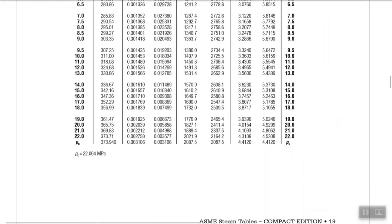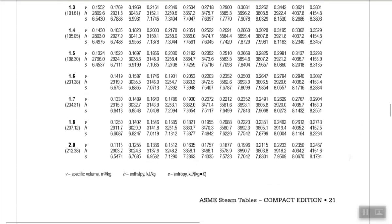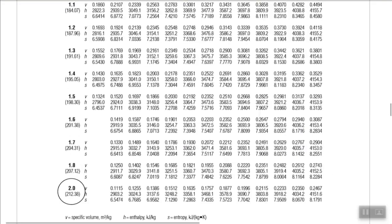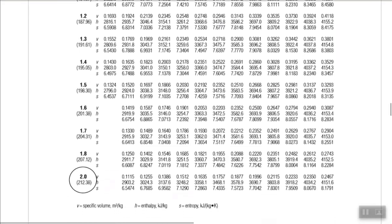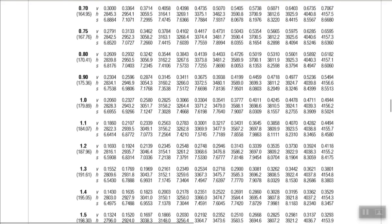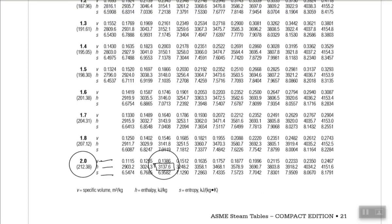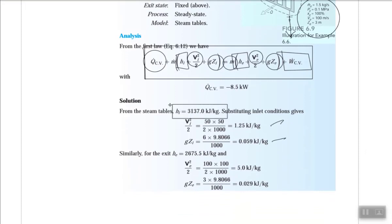Going to the superheated steam table at 2 MPa and 350°C, we find the enthalpy is 3137.6 kJ/kg. Note that slightly different values may appear depending on which steam table is used, but this is the inlet enthalpy.